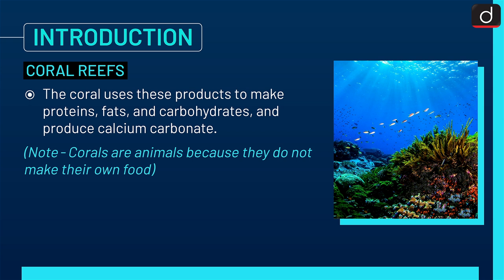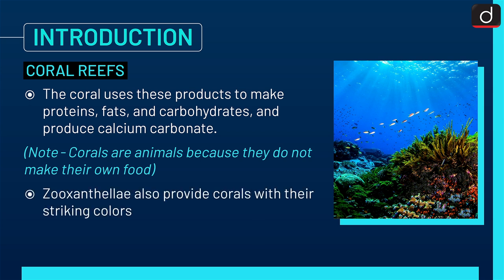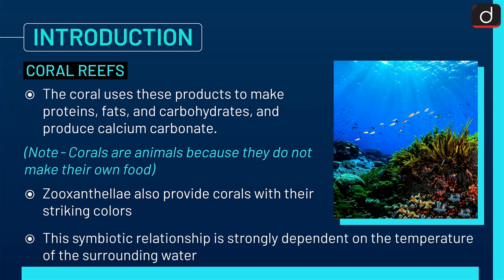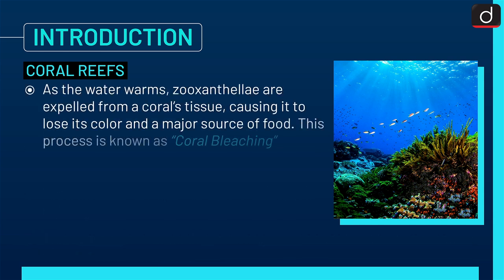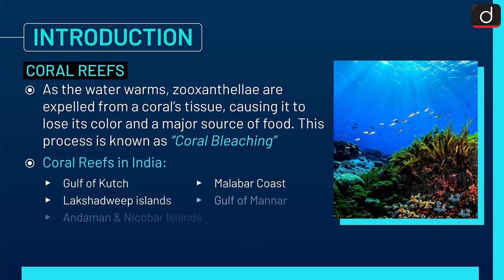An important point: corals are animals because they do not make their own food. Zooxanthilae also provide corals with their striking colors. This symbiotic relationship is strongly dependent on the temperature of the surrounding water. As the water warms, zooxanthilae are expelled from a coral's tissue, causing it to lose its color and a major source of food. This process is known as coral bleaching.